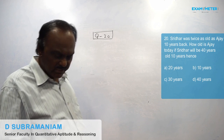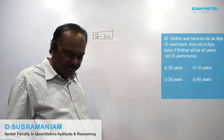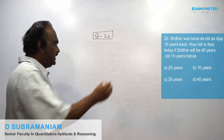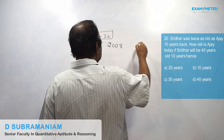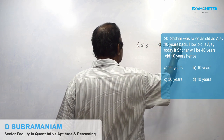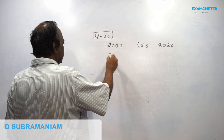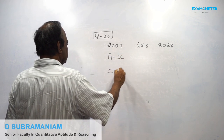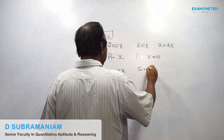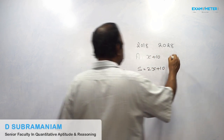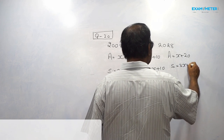Sridhar was twice as old as Ajay 10 years back. How old is Ajay today if Sridhar will be 40 years old 10 years hence? 10 years ago: Ajay is x, Sridhar is 2x. Now: Ajay is x plus 10, Sridhar is 2x plus 10. After 10 more years: Ajay is x plus 20, Sridhar is 2x plus 20.